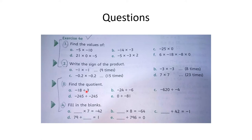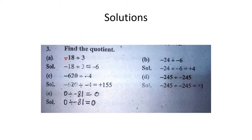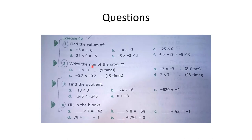Minus 18 divided by 3: 3 positive hai aur 18 negative hai, divide karne se minus aayega. 3 sixes are 18, to answer minus 6 aayega. Uske baad B part: minus 24 ko minus 6 par divide karna hai.